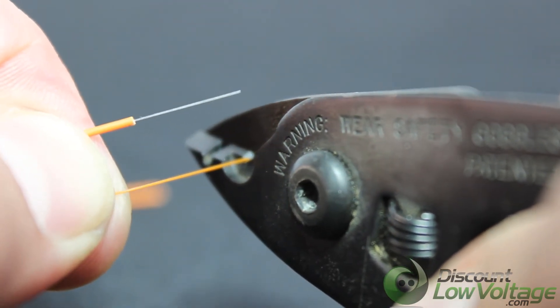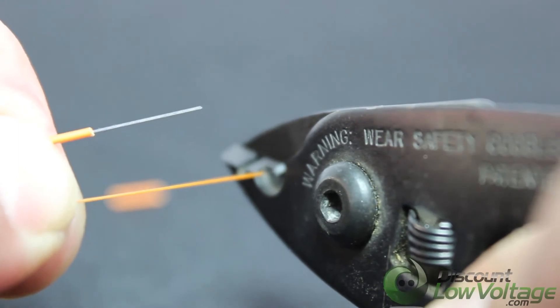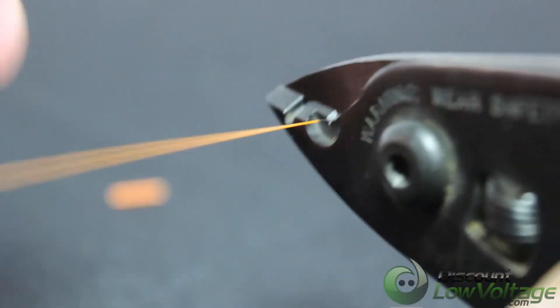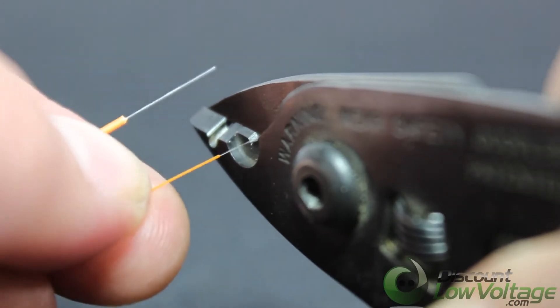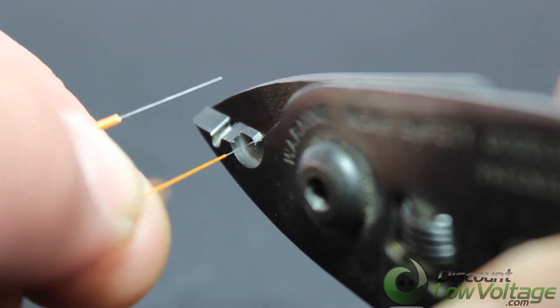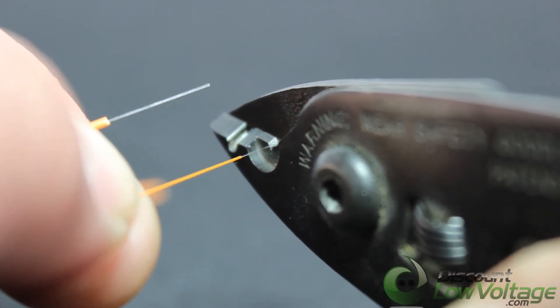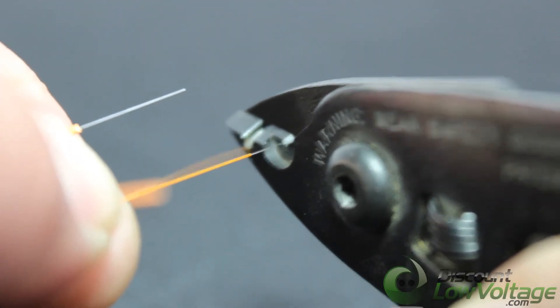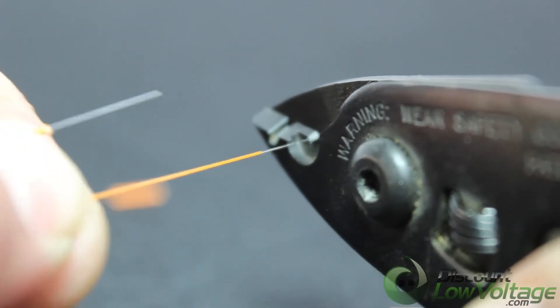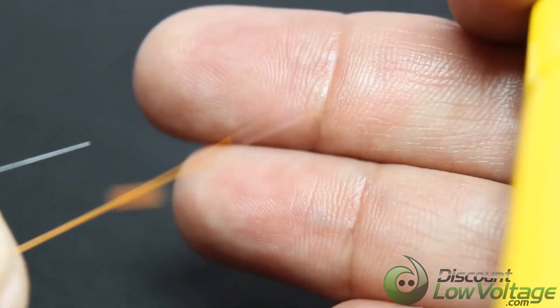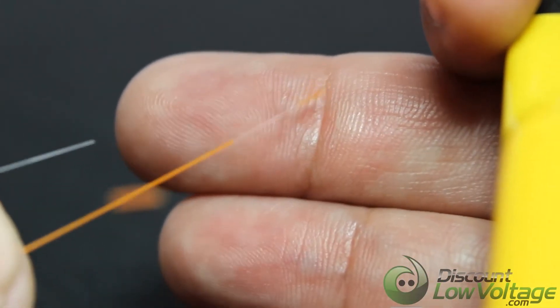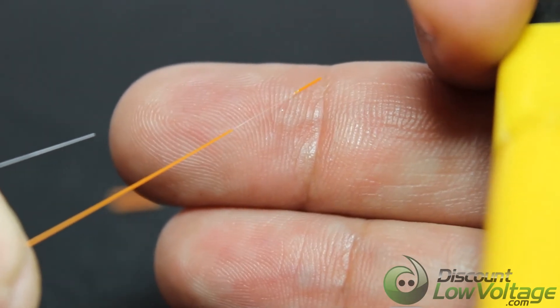Now tight buffer cables are easier to work with, they're easier to strip, and you don't need any additional fan out kits in order to give your glass some durability.